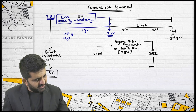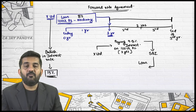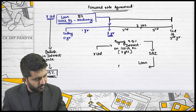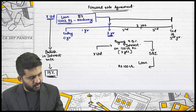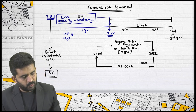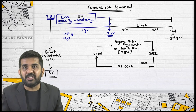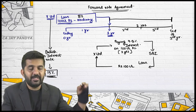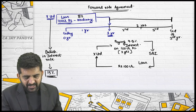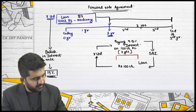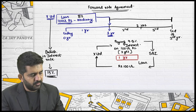SBI will be giving a loan of rupees 100 crore to X Limited. Most importantly, this loan will be given after one year.